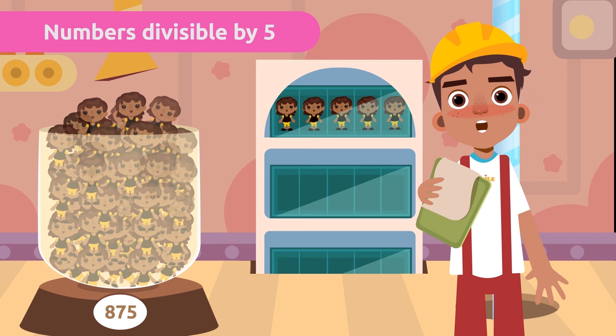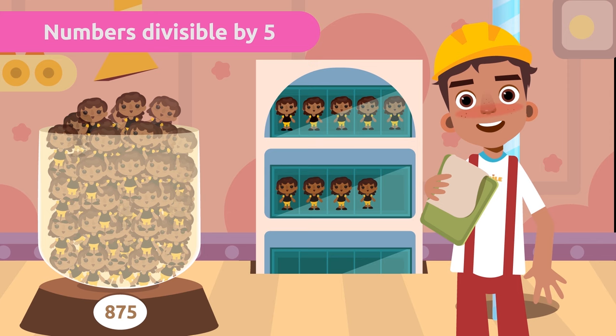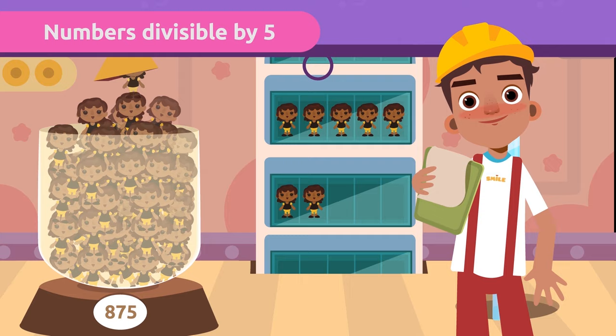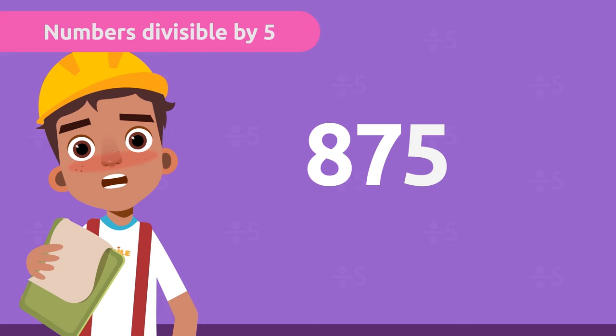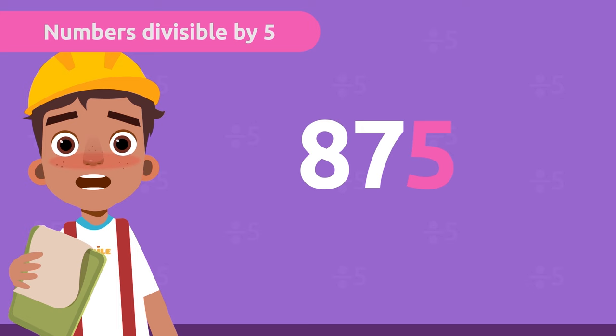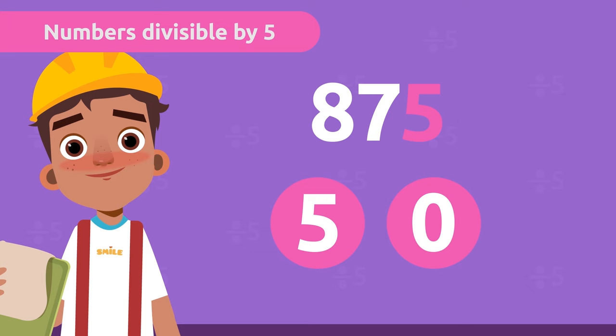Numbers divisible by five. Here we have dolls. In this case, we can store five in each box. To find out if we can divide them into boxes of five, we use the divisibility rule of five. To find out if a whole number is divisible by five, we only have to look at the last digit. It's super easy! Every number ending in five or zero is divisible by five.